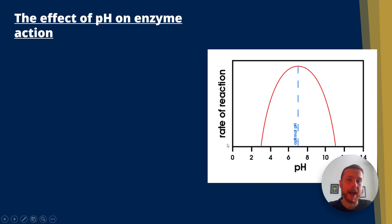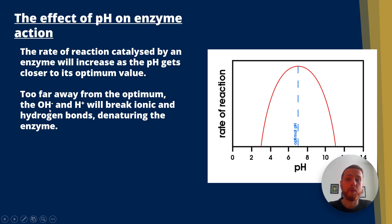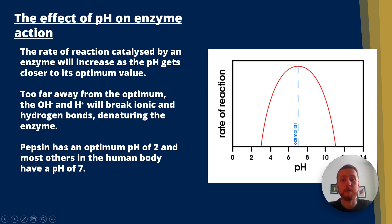Now the effect of pH on enzyme action. Enzymes have an optimum pH, represented by the peak in the graph. The rate of reaction will increase as the pH gets closer to the enzyme's specific optimum value. Too far away from the optimum, OH⁻ and H⁺ ions will break ionic and hydrogen bonds and denature the tertiary structure of the enzyme. Pepsin has an optimum pH of 2, whereas most other enzymes in the body have an optimum pH of 7, which is why we need to neutralise acid using bile.